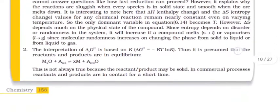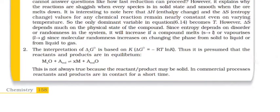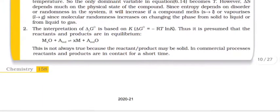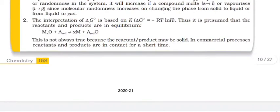The interpretation of ΔG is based on K. ΔG = -RT ln K. This is presumed that the reactants and the products are in equilibrium. MxO plus A gives xM plus AO. This is not always true because the reactant or product may be solid in commercial processes. Reactants and products are in contact for a short time.